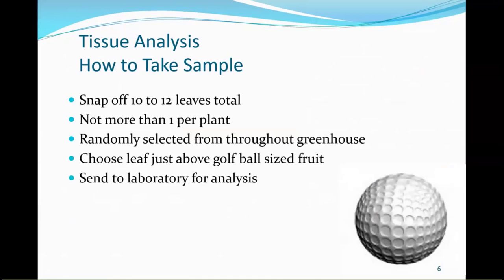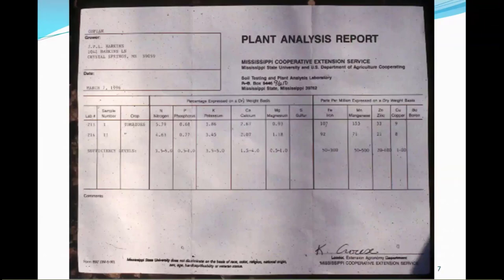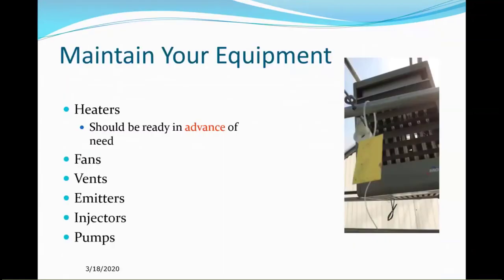Tissue analysis is very important, especially if you're a new grower. You might want to do it every week or two. Once established, every two to four weeks is probably fine because you start to calibrate your eye to what's going on in the plant. When you get your sample analysis report back, look at what's high and low, make adjustments where needed, and if everything is in the sufficiency range, it's a beautiful day.